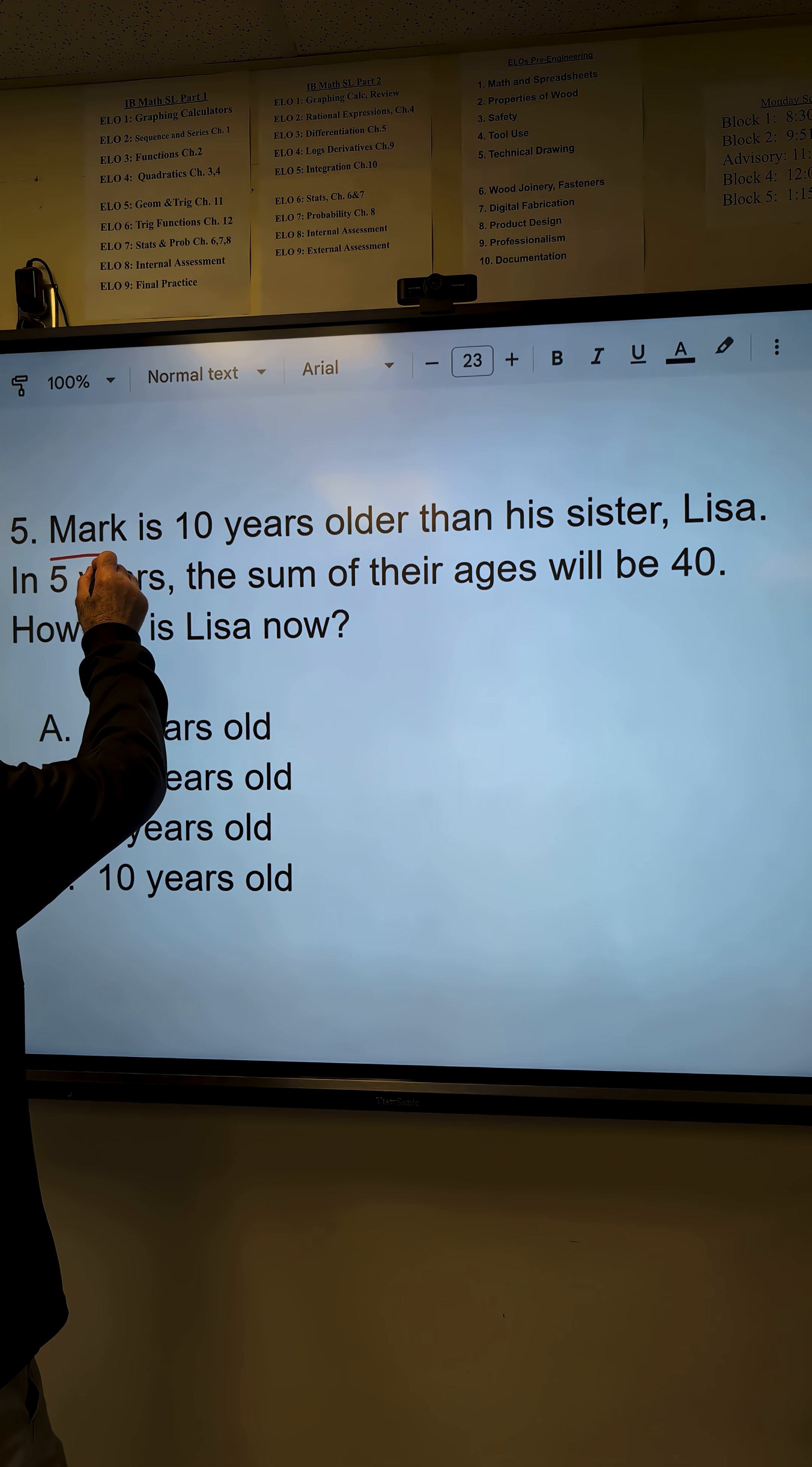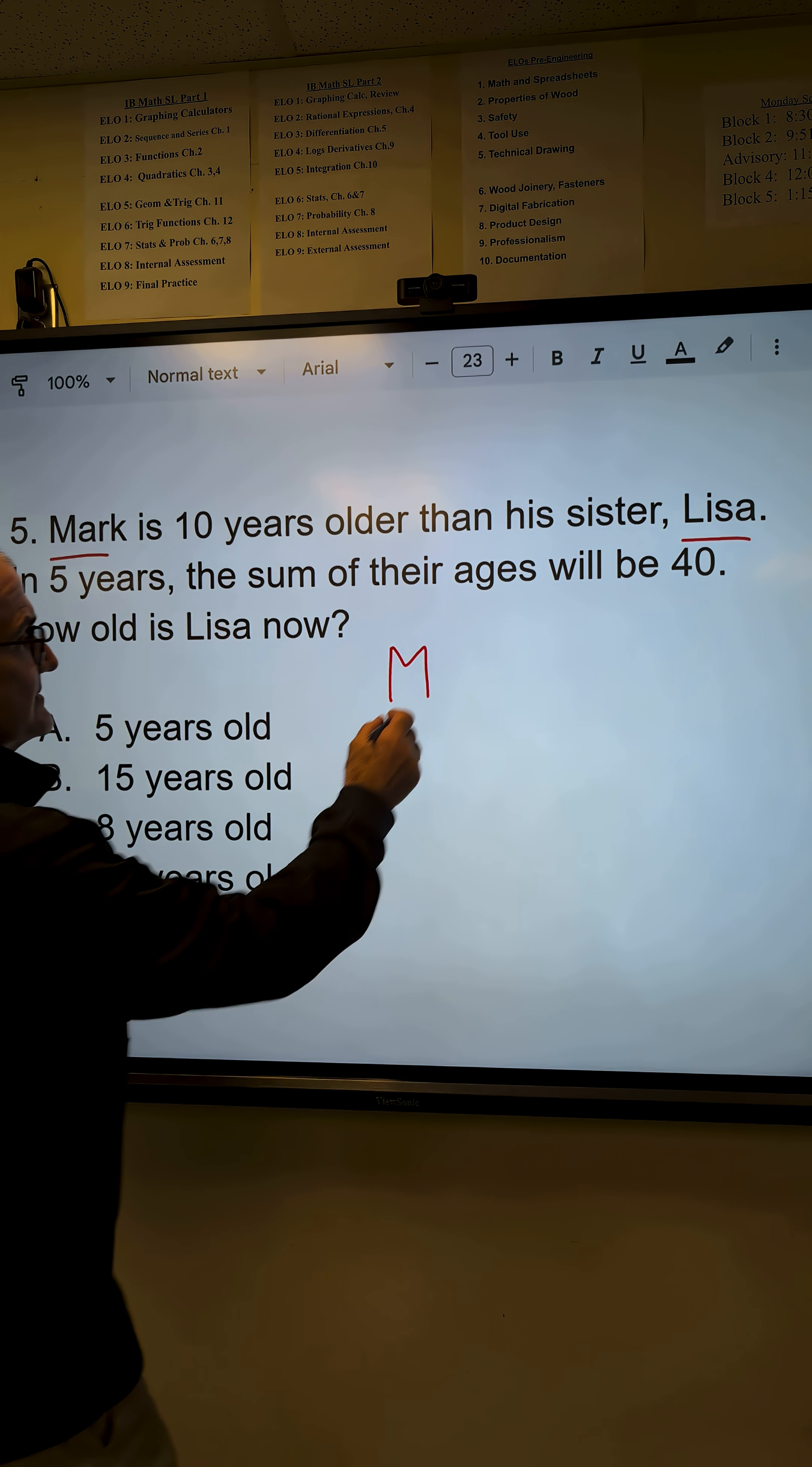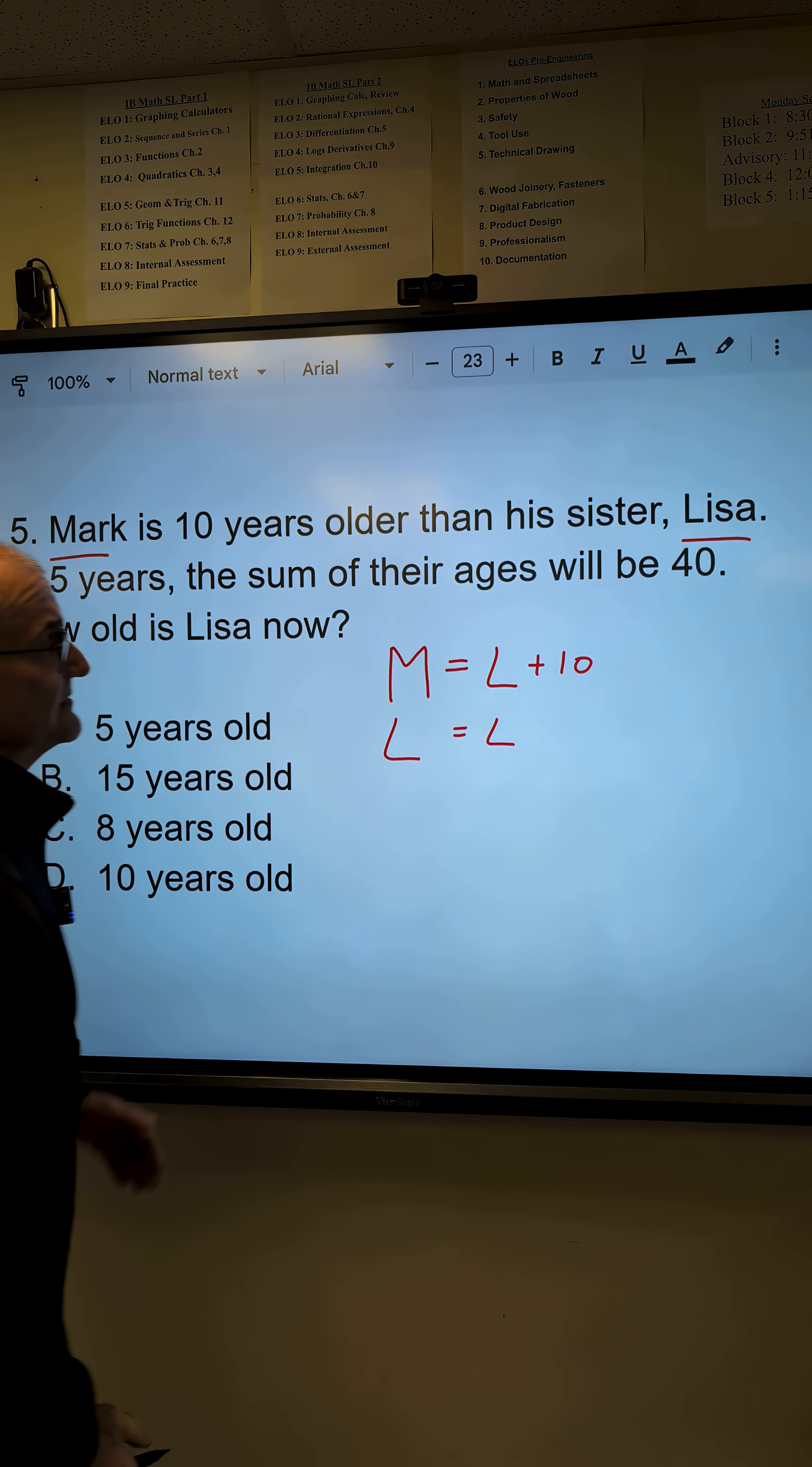So I got two people, Mark and Lisa. Mark is 10 years older than his sister, Lisa. So Mark's age is Lisa's age plus 10, and Lisa is just that.